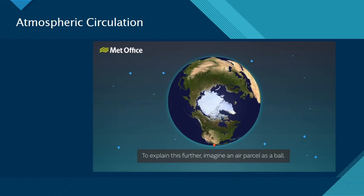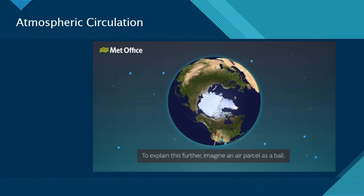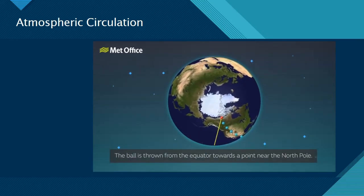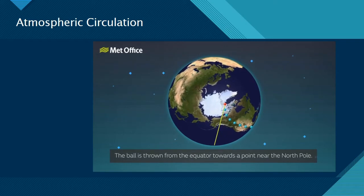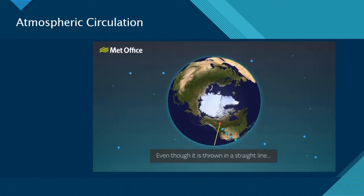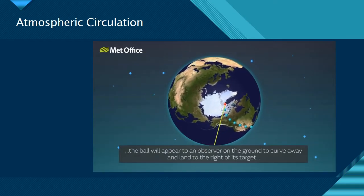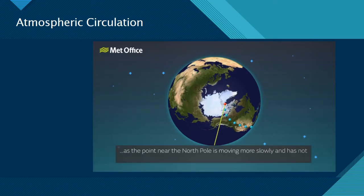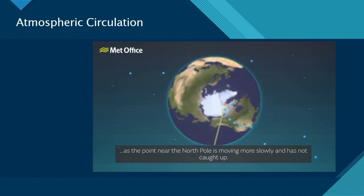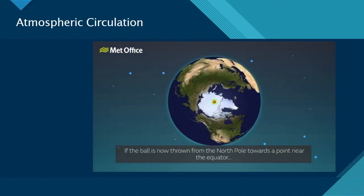To explain this further, imagine an air parcel as a ball. The ball is thrown from the equator towards a point near the North Pole. Even though it moves in a straight line, the ball will appear to an observer on the ground to curve away and land to the right of its target, as the point near the North Pole is moving more slowly and is not caught up.